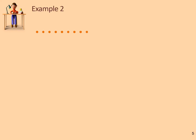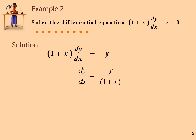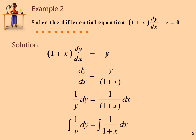Now let's see example number 2. Solve the differential equation (1 + x) dY/dx minus Y equals 0. The solution begins by rearranging: dY/dx equals Y over (1 + x). Remember to integrate both sides: integrate 1/Y dY equals integrate 1/(1 + x) dX.